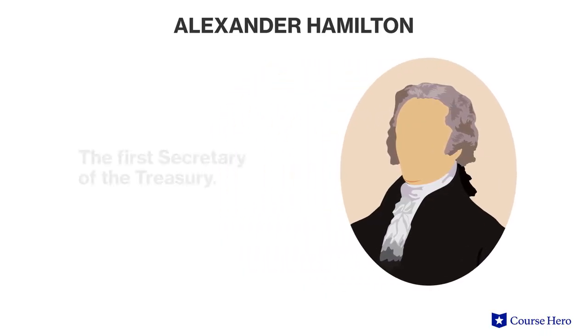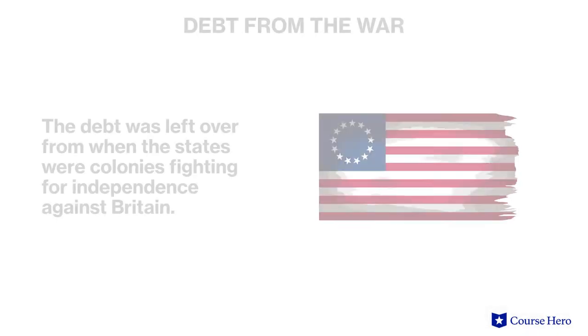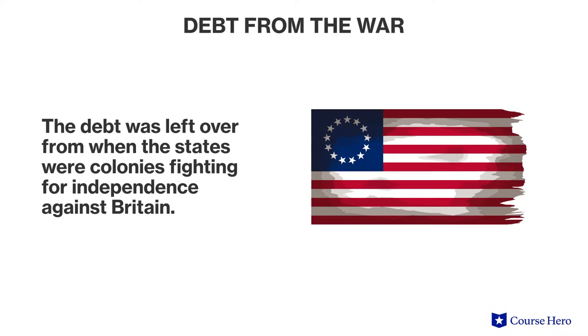Alexander Hamilton, the United States' first Secretary of the Treasury, put together a plan for stabilizing the nation's finances. First, he proposed having the federal government assume the debts of the individual states — debt left over from when the states were colonies fighting for independence from Great Britain.